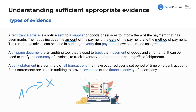A shipping document is used to track the movement of goods and shipments. It can be used to verify the accuracy of invoices, track inventory, and monitor the progress of shipments. This is a piece of paper included with inventory — so when the receiving department opens a box, the auditor can examine the shipping documentation and say, okay, there were 10 pieces of inventory in this box, why don't I see 10 pieces in the warehouse?